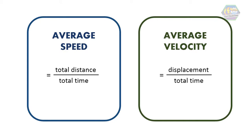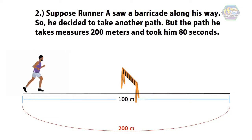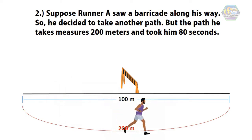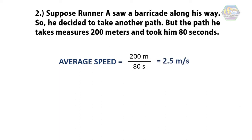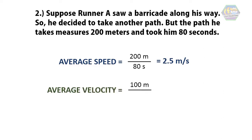Suppose Runner A encountered a barricade along his way, so he took another path measuring 200 meters, which took him 80 seconds. To compute his average speed: 200 meters divided by 80 seconds equals 2.5 meters per second. To compute his average velocity: the displacement of 100 meters divided by 80 seconds equals 1.25 meters per second. That is the concept of average velocity.